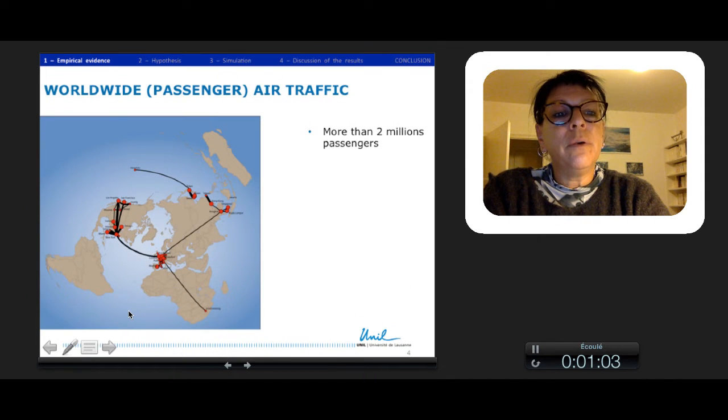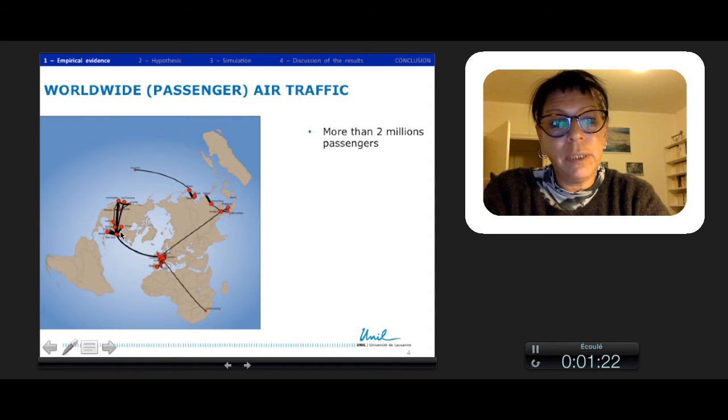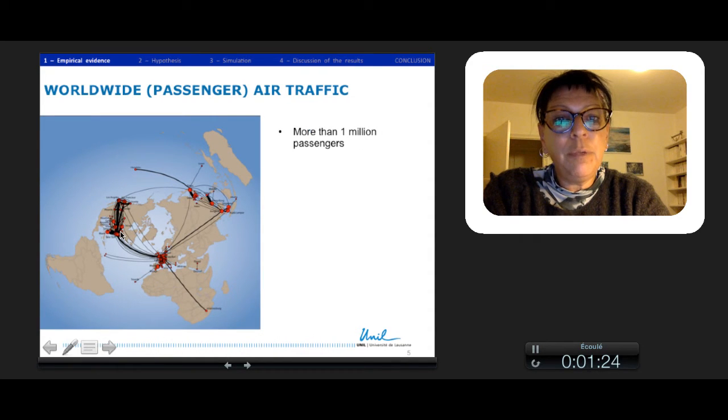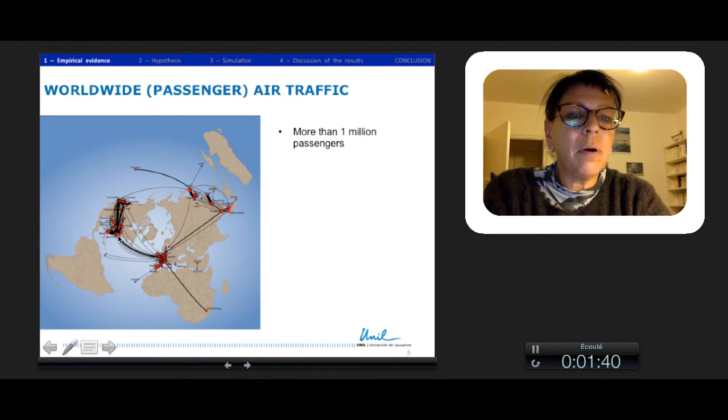The empirical evidence shows that with linkage between cities with more than 2 million passengers, we have very few links between few nodes, few airports or cities. If we take more than 1 million passengers, we don't have a lot of nodes because all linkages remain between these nodes.